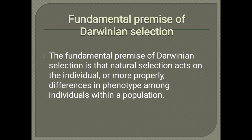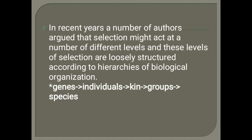Next: fundamental premise of Darwinian selection — اس کی theory کا core کیا ہے؟ The fundamental premise of Darwinian selection is that natural selection acts on the individual — more properly, on differences in phenotype among individuals within a population. Darwin کے مطابق، natural selection سے produce کیے گئے individuals میں اگر phenotype اور inherited values میں تھوڑا change ہو، تو وہ اچھے طریقے سے survive اور reproduce کر سکتے ہیں۔ Recent years میں کچھ authors نے argue کیا کہ selection might act at a number of different levels, and these levels of selection are loosely structured۔